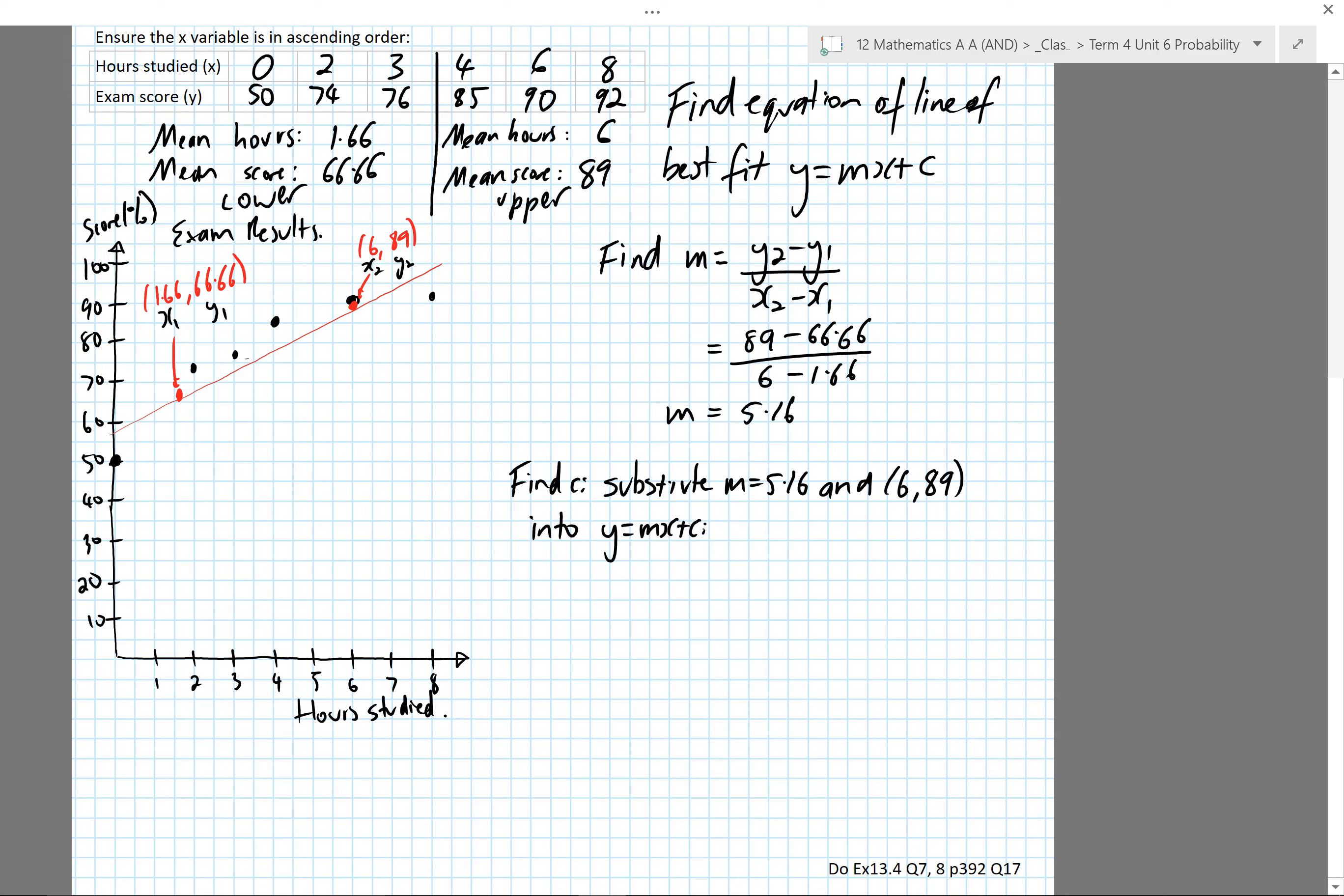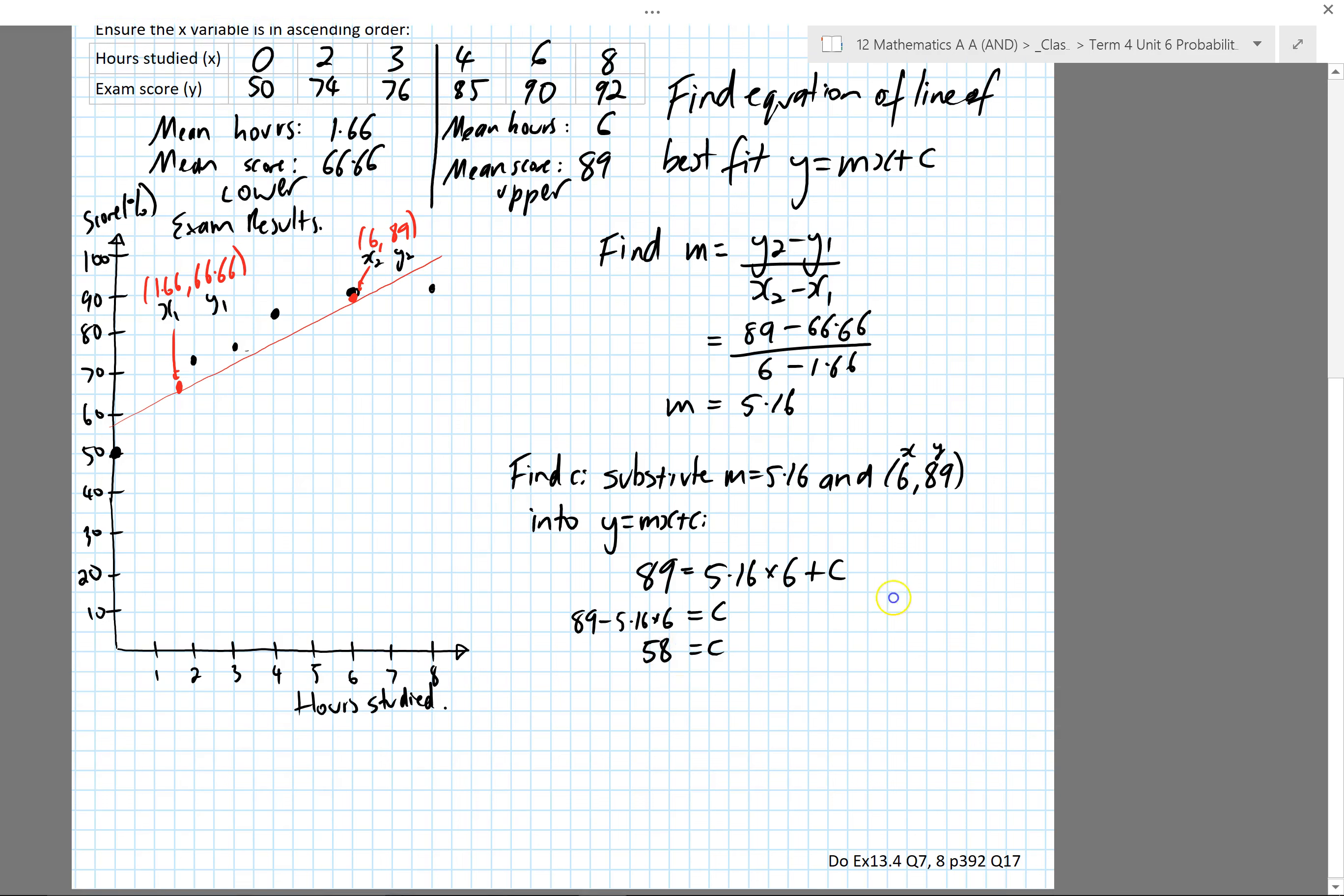By doing that, I should be able to solve for c. So this is my x value and my y value. 89 is my y value. 5.16 times my x value of 6 plus c. So I can rearrange this for c and end up with 58 as my c value.